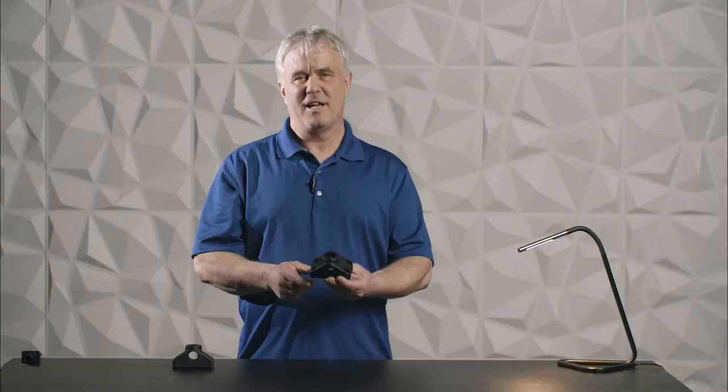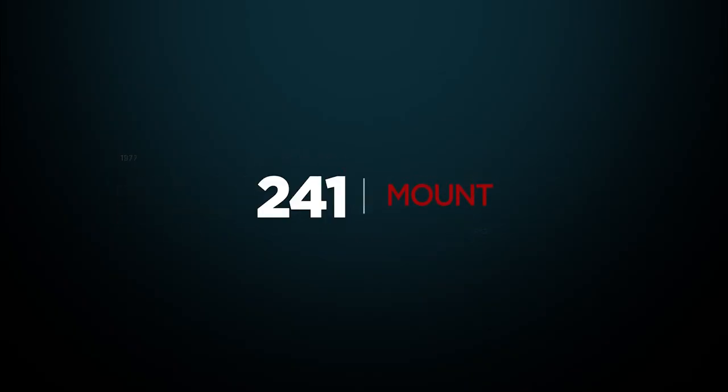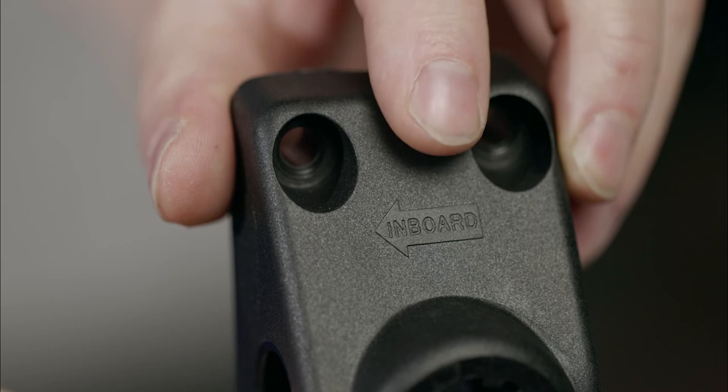Hey everybody, I'm John. Here's another quick tip video on how to install a 241 mount. We've molded a handy arrow into the 241, indicating which side of the mount should face inboard or the inside of the boat.